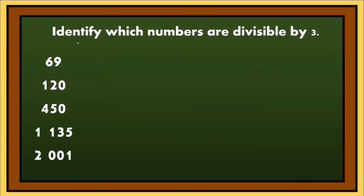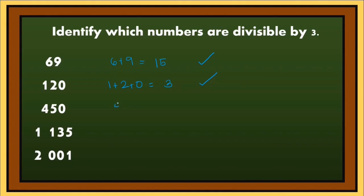Let's try to answer this: identify which numbers are divisible by 3. All we have to do is add all the digits. 6 plus 9 is 15; 15 is a multiple of 3, so 69 is divisible by 3. Next, 120: 1 plus 2 plus 0 is equal to 3; 3 is a multiple of 3, so 120 is divisible by 3. Next, 450: 4 plus 5 plus 0 is equal to 9; 9 is a multiple of 3, so 450 is divisible by 3.